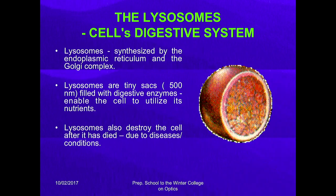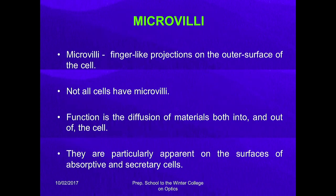Lysosomes are synthesized by the endoplasmic reticulum and the Golgi complex. They are tiny sacs of almost 500 nanometers in size, filled with digestive enzymes that enable the cell to utilize its nutrients. Lysosomes also destroy the cell after it is dead — if the cell is not working properly due to disease, lysosomes help to kill that cell properly. Microvilli are hair-like or finger-like projections on the outer surface of the cell. Not all cells have microvilli. Their function is the diffusion of material both into and out of the cell, particularly apparent on the surface of absorptive and secretive cells.